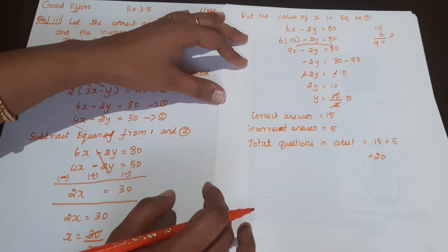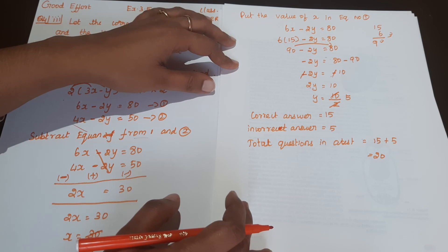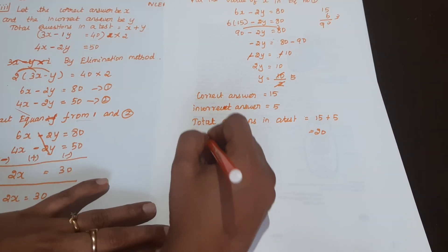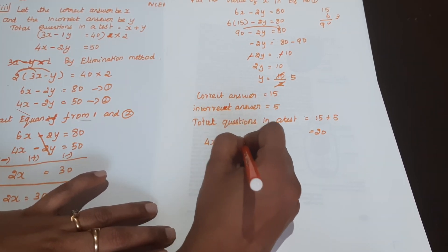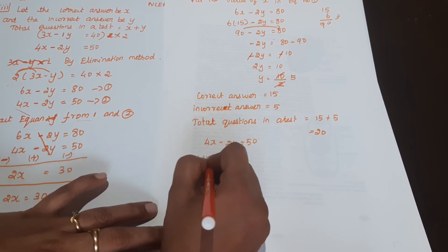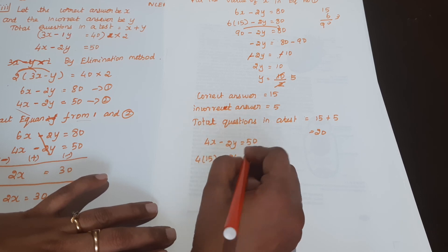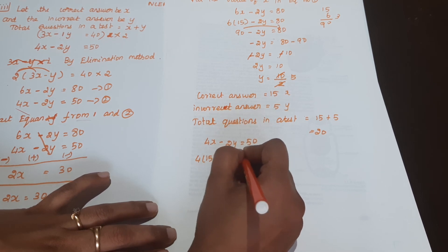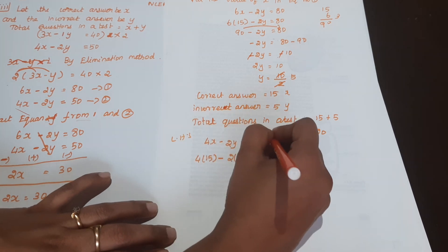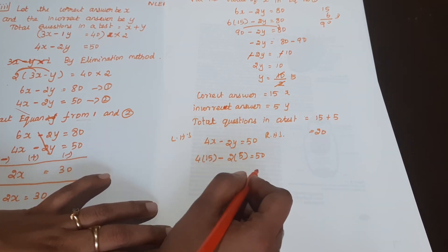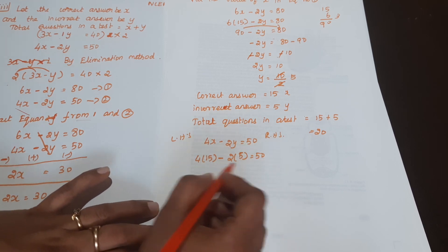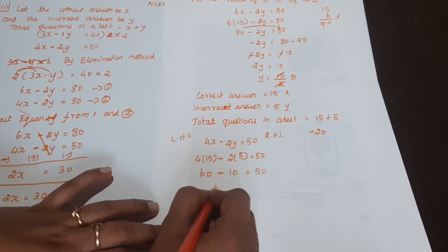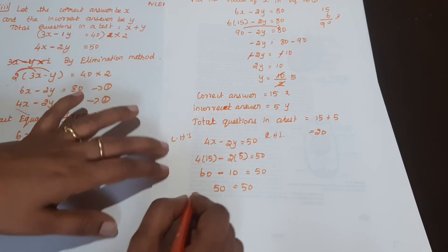Now we verify whether the solution x and y is correct. Using equation number 2: 4x minus 2y equals 50. Substituting x equals 15 and y equals 5: 4 times 15 minus 2 times 5 equals 60 minus 10 equals 50. Left hand side equals right hand side — verified.